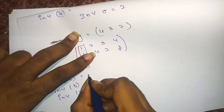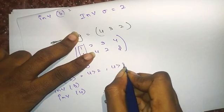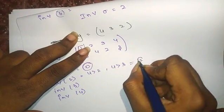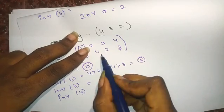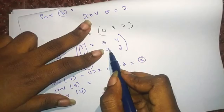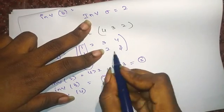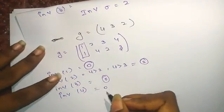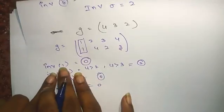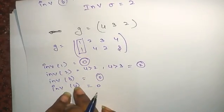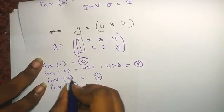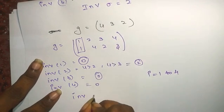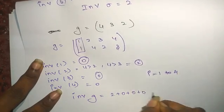For inversion(2): f(2) = 4. 4 is greater than 2 and 4 is greater than 3 — count is 2. For inversion(3): f(3) = 2. 2 is not greater than 3 — so it is 0. For inversion(4), the last digit, inversion is always 0. So the inversion of g equals inversion(1) + inversion(2) + inversion(3) + inversion(4) = 0 + 2 + 0 + 0, which is 2.